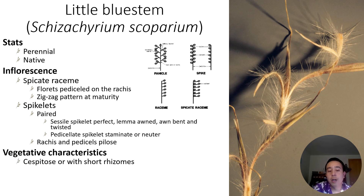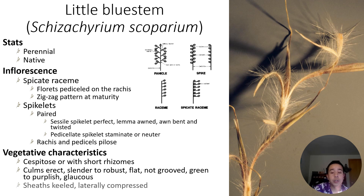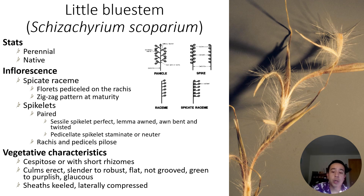Vegetatively speaking, little bluestem often grows cespitose — bunchy, like a bunch grass — and has short rhizomes, so it can also spread asexually. The culms often grow erect but are slender to robust, and they're flat — not grooved like big bluestem. The culms themselves can be green to purplish and often glaucous. The sheaths are often keeled — meaning folded or bent like the keel of a boat — and often laterally compressed to the culm.